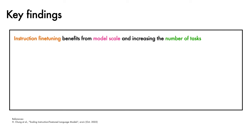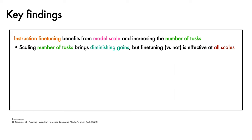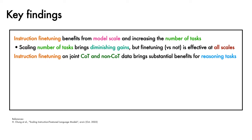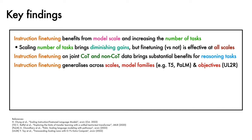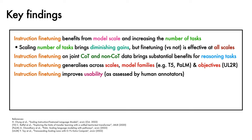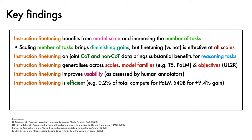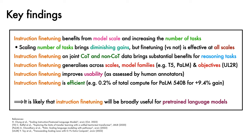We'll now summarize the key findings of the paper. Instruction fine-tuning benefits from model scale and increasing the number of tasks. It is found that scaling the number of tasks brings diminishing gains, but fine-tuning is highly effective at all model scales. Instruction fine-tuning and joint chain-of-thought and non-chain-of-thought data bring substantial benefits for reasoning tasks. Instruction fine-tuning generalizes across scales, model families such as T5 and PaLM, and objectives such as UL2R. Instruction fine-tuning improves usability as assessed by human annotators on open-ended questions. Finally, instruction fine-tuning is efficient — it required only 0.2% of the total compute budget to fine-tune PaLM 540 billion and attain a 9.4% gain in performance. These findings suggest that instruction fine-tuning will be broadly useful for pre-training language models.